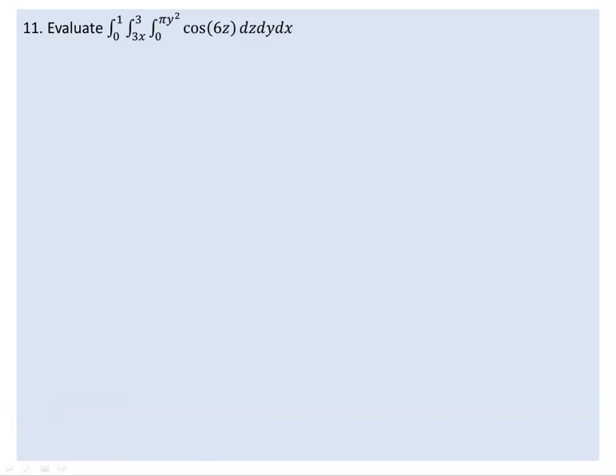The question is how to evaluate the integral from 0 to 1, 3x to 3, 0 to pi of y squared times cosine 6z, dz dy dx. The solution goes like this.